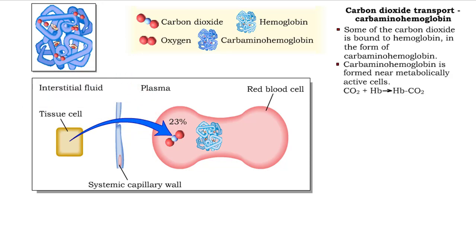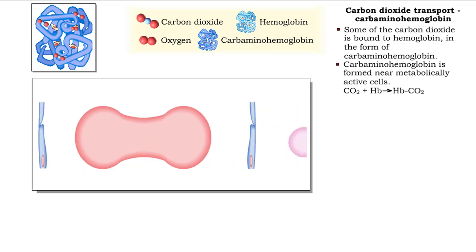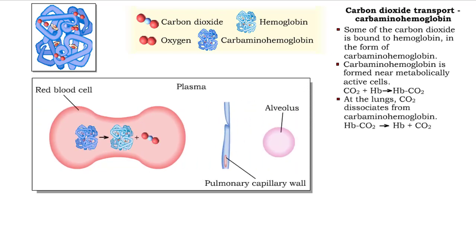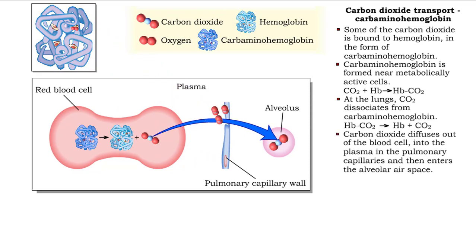Carbaminohemoglobin is formed near metabolically active cells and carries carbon dioxide from systemic cells to the lungs. When the blood reaches the lungs, carbon dioxide dissociates from the hemoglobin and diffuses out of the plasma into the alveolar airspace.